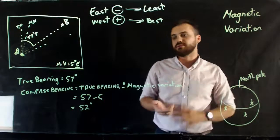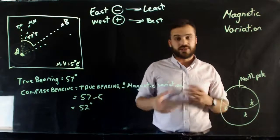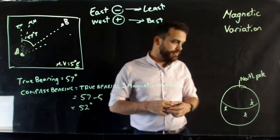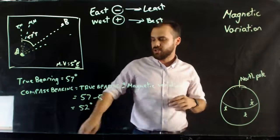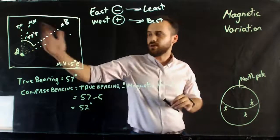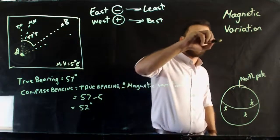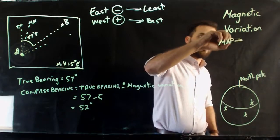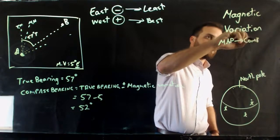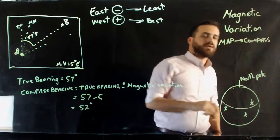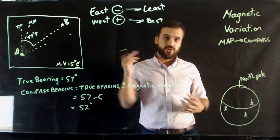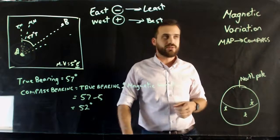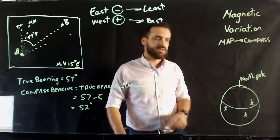Now, obviously, the mistake that people are going to make here is mixing up whether they should do plus or minus. That's magnetic variation. That's magnetic variation when you're going from map to compass. Now obviously, if you're going from compass to map, all of that gets reversed. But you and me can talk about that one in person. That's magnetic variation map to compass.